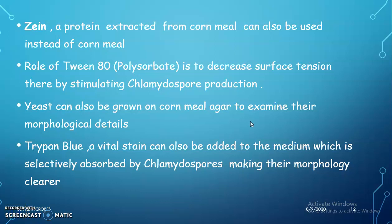Yeast can be grown on cornmeal agar to examine morphological details. Trypan blue is a vital stain that can also be added to the medium; it is selectively absorbed by chlamydospores, making their morphology clearer.